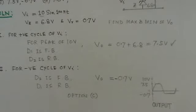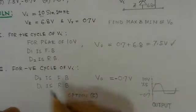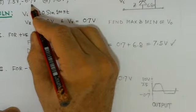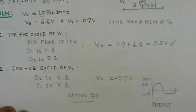So option C here, that is 7.5 volts as the maximum and minus 0.7 volts as the minimum, which appears across the output.